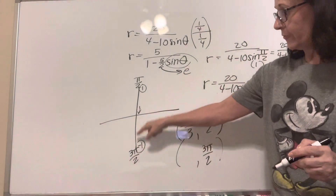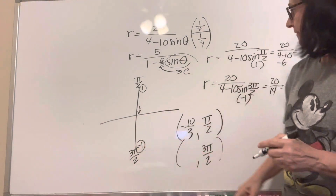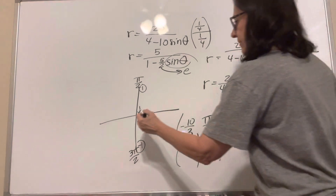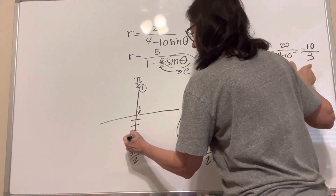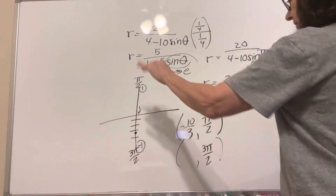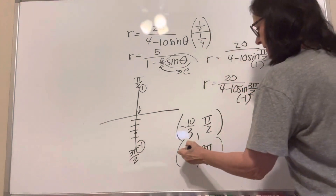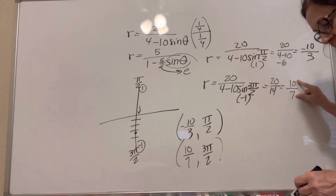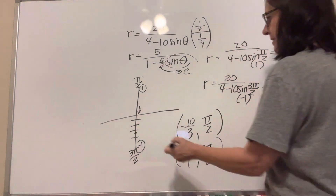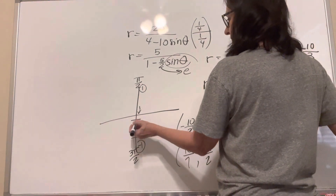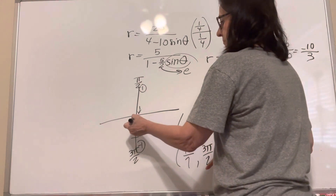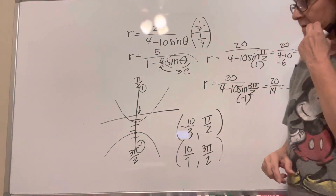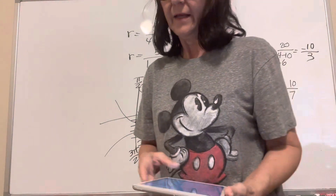Going in this direction. So both of my vertices are going to be down here. If I were plotting this, I'd have one at negative 10 thirds, which is about 3 and a third. It would look up. And this one was 10 sevenths — it's going to look down because 10 sevenths is like 1 and 3 tenths up here. So the hyperbola would go like this if we were to graph it.